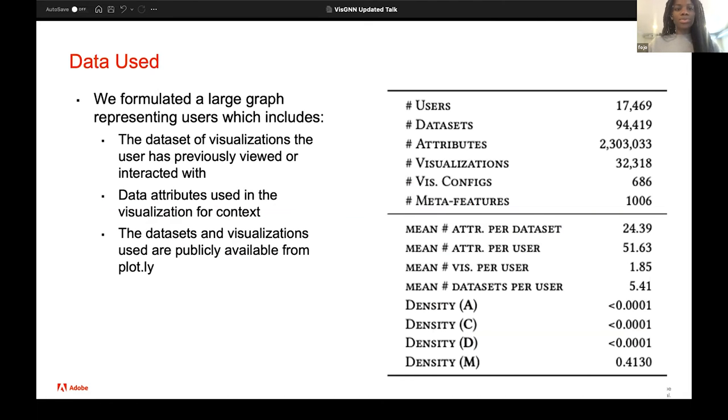The data that we used was formulated. We formulated a large graph representing users. And this includes a dataset of visualizations that the user has previously viewed or interacted with. Data attributes used in the visualization for context. And the datasets and visualizations were publicly available, when we got these from Plotly. In the data we used, we had 17,000 users and they had an average of about 5.4 datasets. And we had 94,000 datasets with 2 million attributes and 32,000 visualizations. So the data that we looked from was quite large. And we think that this, because this is a large dataset and it was heterogeneous, we think that this is very practical.